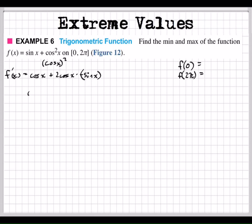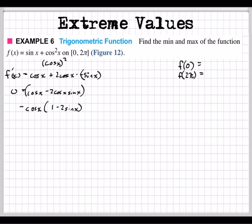So if I rewrite this, it'll be cosine x minus 2 cosine x sine x. Now we're setting this equal to 0. In order to solve this, we're going to factor — we're going to factor out a cosine. Can we take a cosine out of both of those? Yes. We get 1 for the first term and minus 2 sine x for the next one.